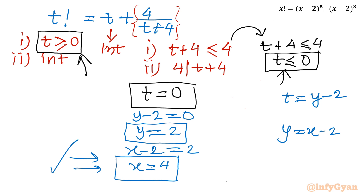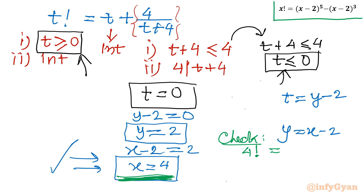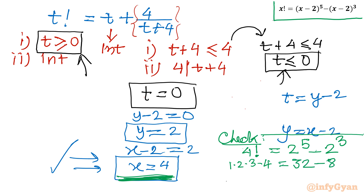Let us verify by putting x equal to 4 into the original equation. Left-hand side: 4 factorial. Right-hand side: (4 minus 2) to the power 5 minus (4 minus 2) cubed, which is 2 to the power 5 minus 2 cubed, equals 32 minus 8 equals 24. And 4 factorial equals 1 times 2 times 3 times 4 equals 24. Both sides equal 24, confirming x equals 4 is the correct answer.